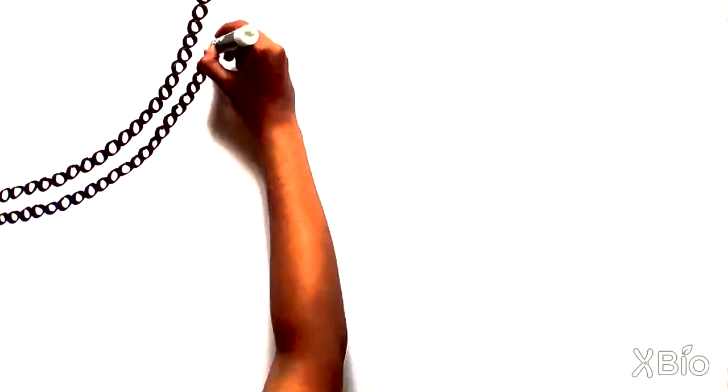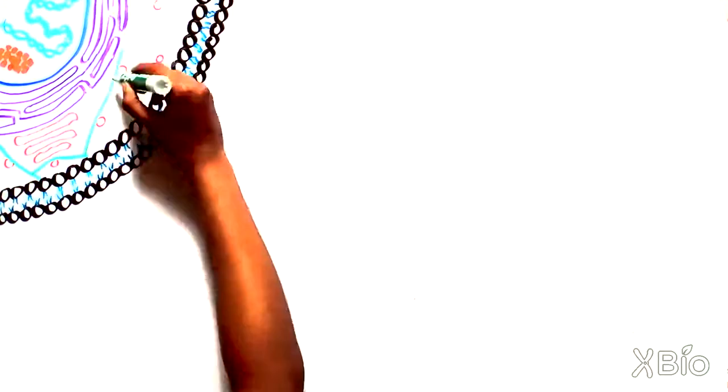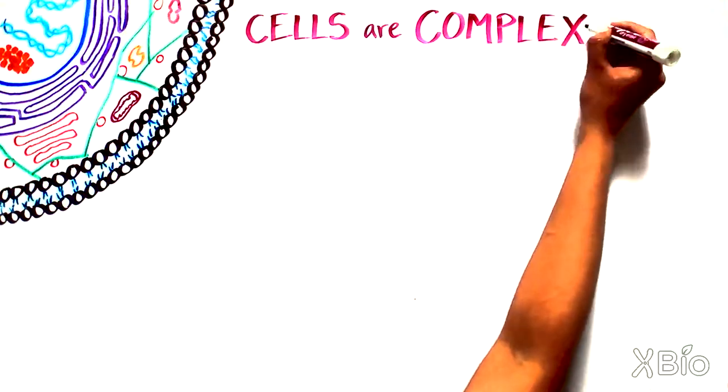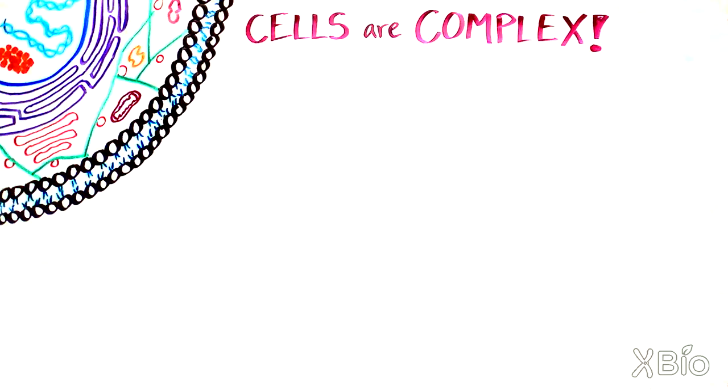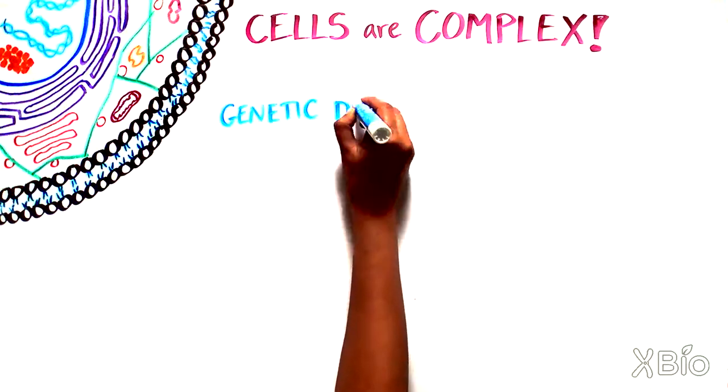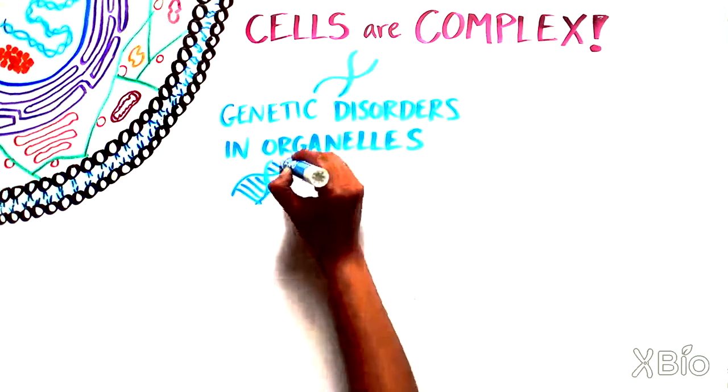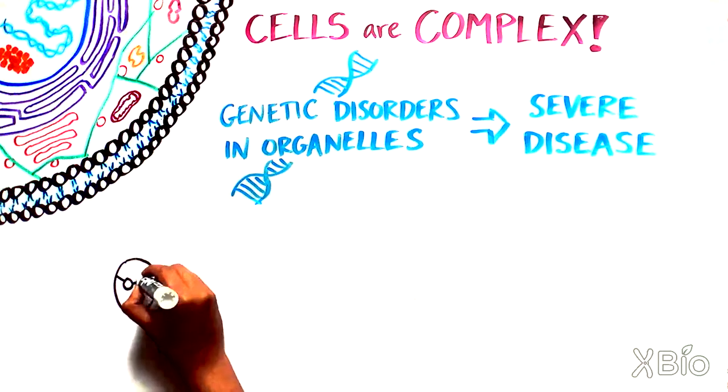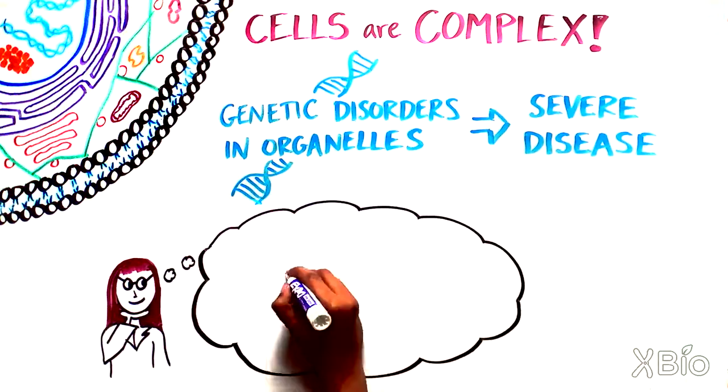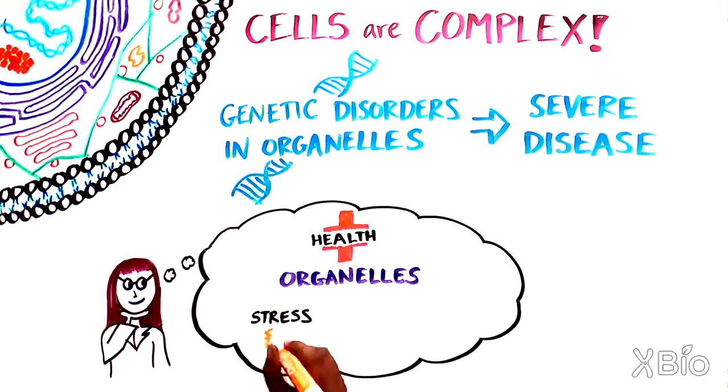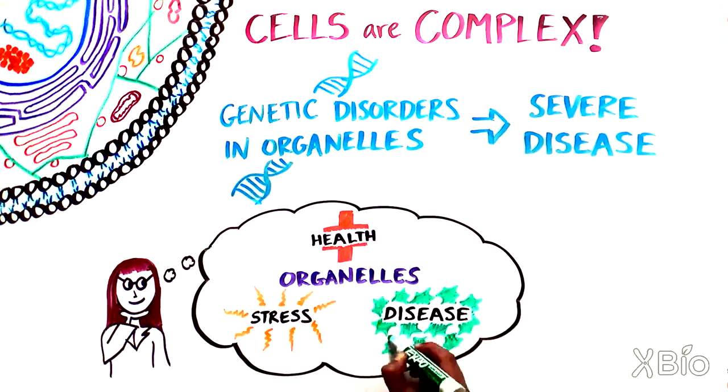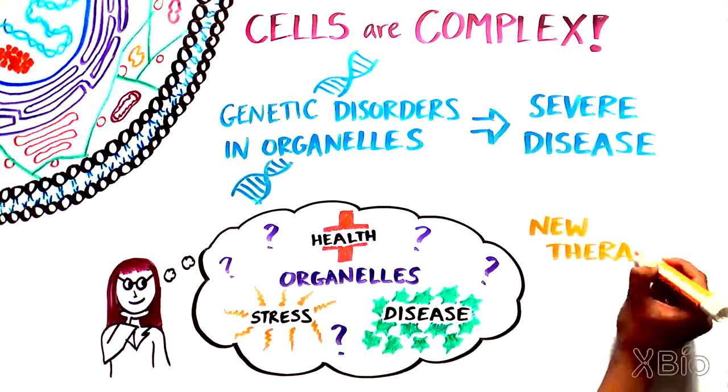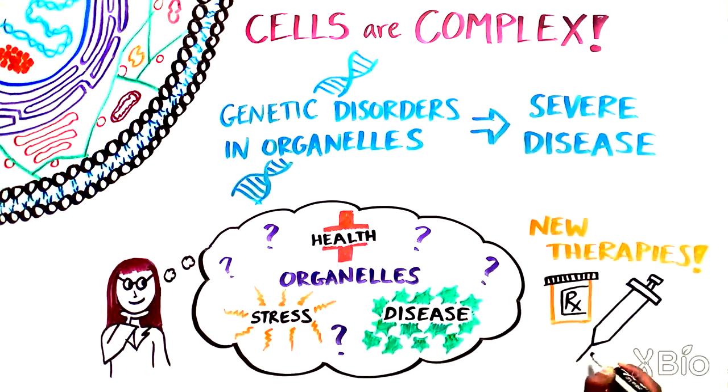As our tour concludes, I hope that you can appreciate that the cell is a complex environment with many parts working together to keep our bodies going. Thus, not surprisingly, individuals with genetic disorders in one of the cell's organelles often have severe disease. As scientists learn more about the intricate work of organelles in health, stress, and disease, new therapies to combat these disorders may become possible. And we can look forward to understanding more about how these tiny organelles make our cells tick.